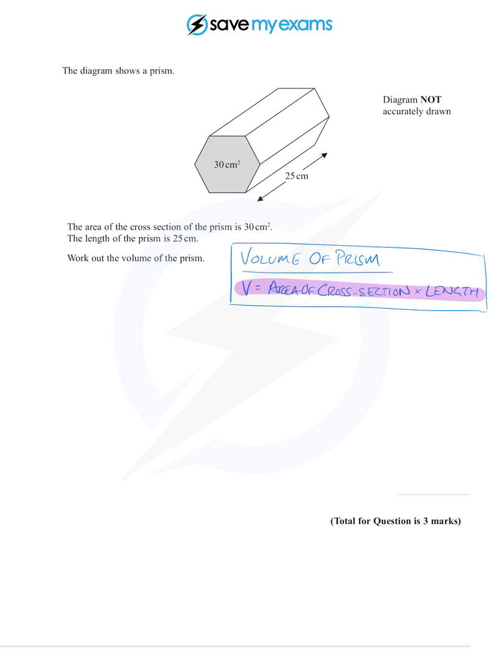And it is the area of the cross section, which we're given, times the length, which we're given. So actually the volume is pretty easy to work out - it is 30 times 25, and all we have to do is multiply those two things together.